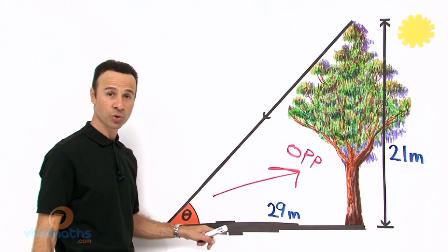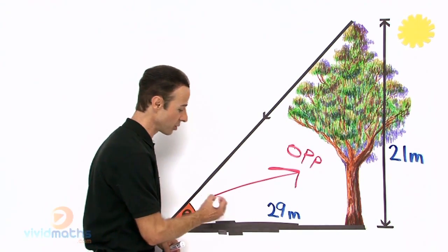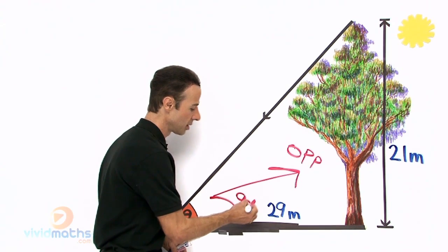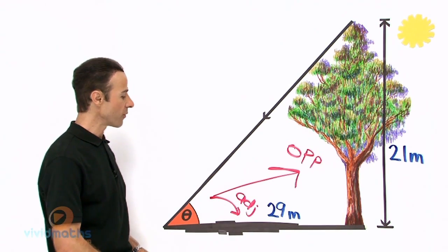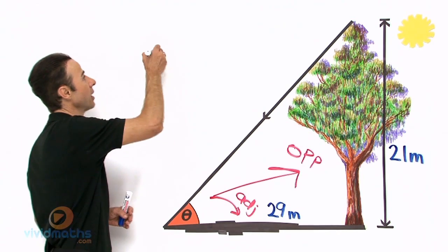That is part of the trig ratio, and then right next to it, because the angle is attached to the ground right here is the 29 meters. What is that going to be right next to it? It is called ADJ, and you know that is adjacent isn't it. So we have opposite over adjacent, let us write that up.